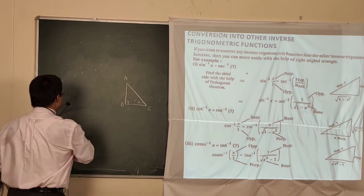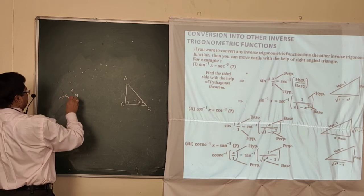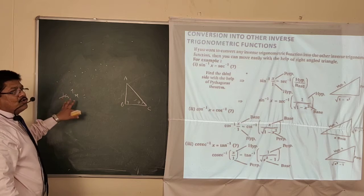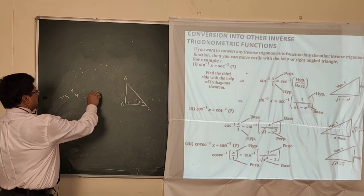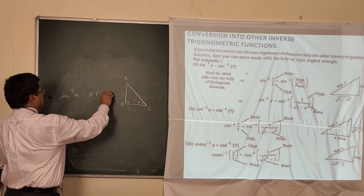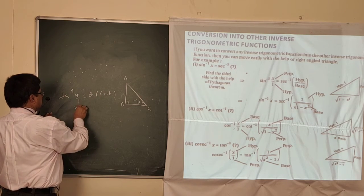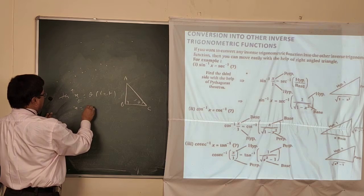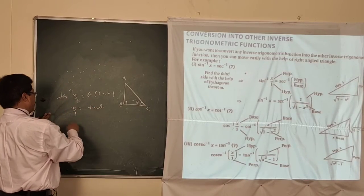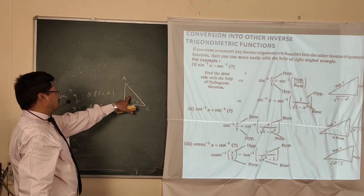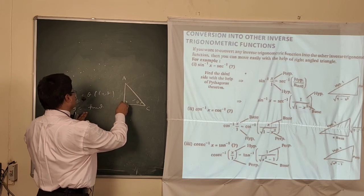Suppose you want to convert tan⁻¹x in terms of sin and cos. Let tan⁻¹x = θ. So x = tan θ. Replacing your value, tan θ means perpendicular upon base. So this means perpendicular is x and base is 1.